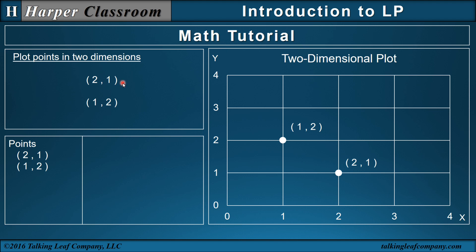Consider these two points: 2, 1. I come over 2 on the x-axis, come up 1 on the y-axis, and so that point has an x-value of 2 and a y-value of 1. The point 1, 2 — I come over 1 and up 2, so I can plot points in two dimensions.